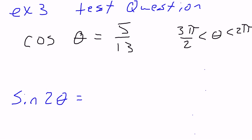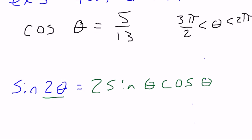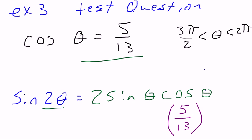So how would I find sine? Well, the formula for sine of 2 theta is 2 sine theta cosine theta, looking on our sheet. Well, they just gave us cosine of theta, that's 5 thirteenths. So I'm going to substitute that right in. But we also need sine of theta.